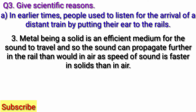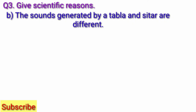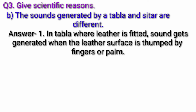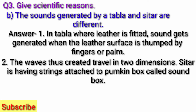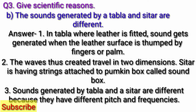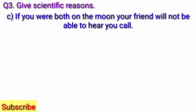Metal, being a solid, is an efficient medium for sound to travel, and so sound can propagate further in the rail than it would in air, as the speed of sound is faster in solids than in air. Question B: The sounds generated by tabla and sitar are different.